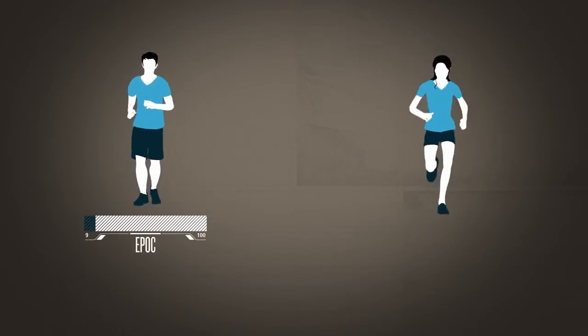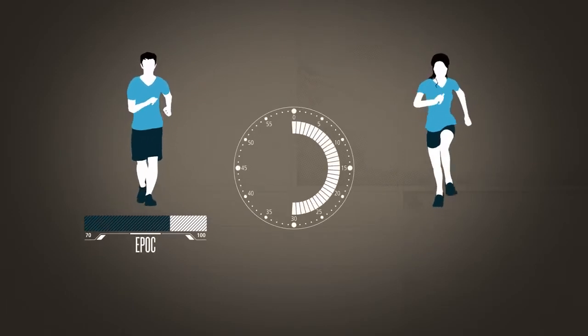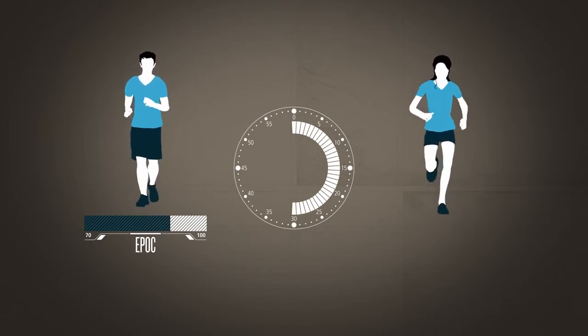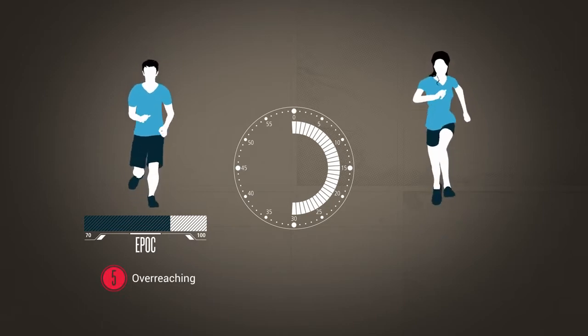For example, for a person who has not been exercising regularly, a half-hour run at 80% of maximum heart rate would produce an EPOC of about 70, resulting in a training effect of 5, which is categorized as overreaching.